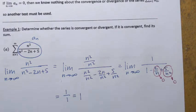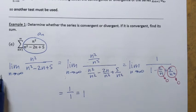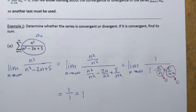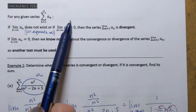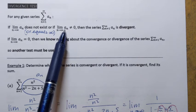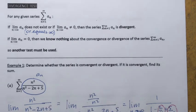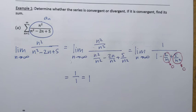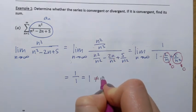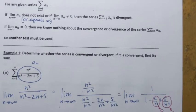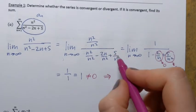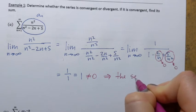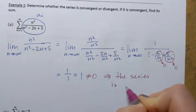That means the limit equals 1 over 1, which is 1. So we've found the limit — it equals 1. That falls into the first case: the limit exists but it's non-zero, it's not equal to 0. And that means that the series is divergent.